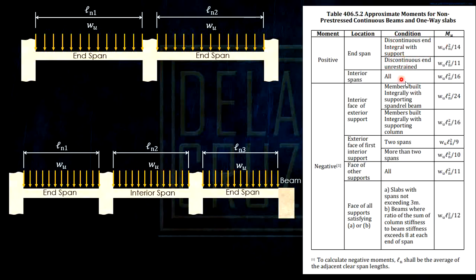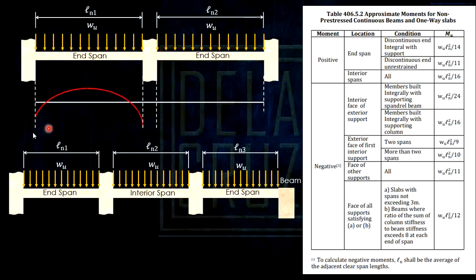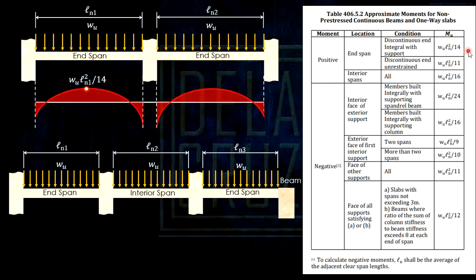For the condition 'discontinuous and integral with support,' this means the end is integral (fixed) with the support. The positive moment here is given by W·ln²/14. If we draw the moment diagram, note that it is fully fixed, producing negative moments at the ends and a positive moment at midspan. We use LN1 for span 1 and LN2 for span 2 respectively.